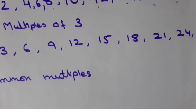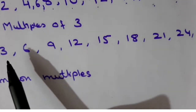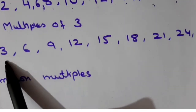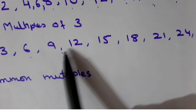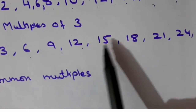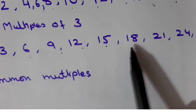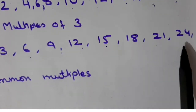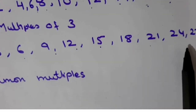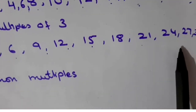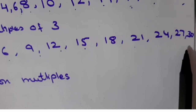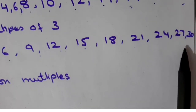And the first ten multiples of three are: 3, 6, 9, 12, 15, 18, 21, 24, 27 and 30.